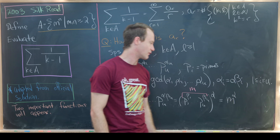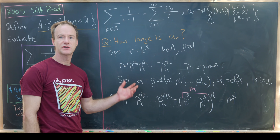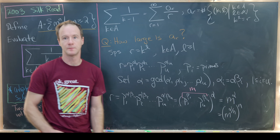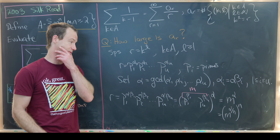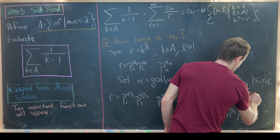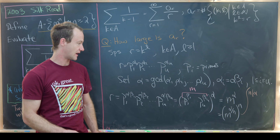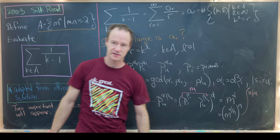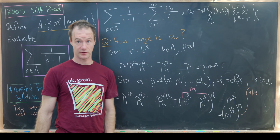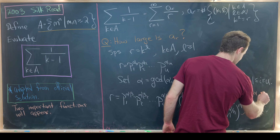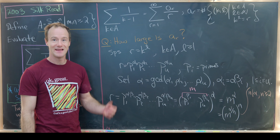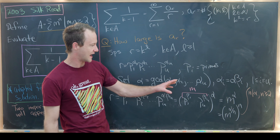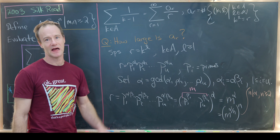We want to count how many different ways we can write r as something to some power. For special values of n, we can write r as (m to the alpha over n) all to the nth power, where alpha over n is a natural number. In order to do this, we need n to divide alpha — so n is a divisor of alpha. Furthermore, in order for this to be a valid representation in A, we need that exponent n to be bigger than or equal to 2. So the condition is: n divides alpha and n is bigger than or equal to 2, meaning n can be any divisor of alpha except 1.